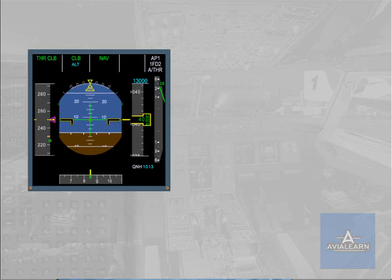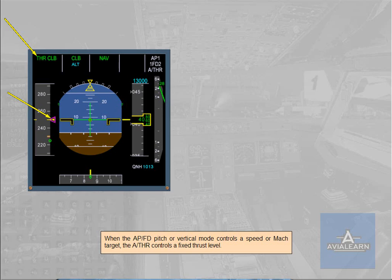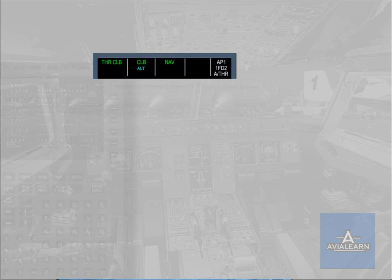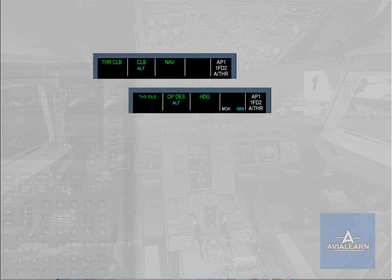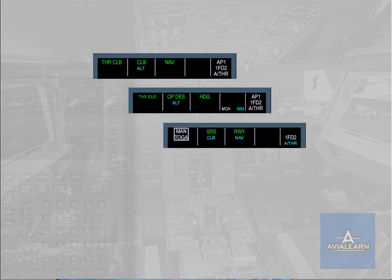When the autopilot flight director pitch or vertical mode controls a speed or Mach target, the autothrust controls a fixed thrust level. The autopilot flight director controls a speed target by adjusting aircraft pitch in: open climb or climb, open descent, and takeoff and go-around in SRS (Speed Reference System). In these cases, autothrust is in thrust mode.